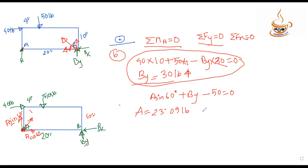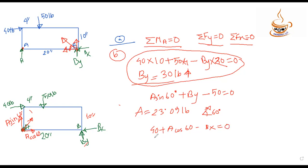Using the angle of 60 degrees for the roller reaction, the horizontal component Bx: from the force equilibrium, the cosine component at 60 degrees is considered. After accounting for the sign (negative or positive direction), the value of Bx comes out to be 51.55 pounds.